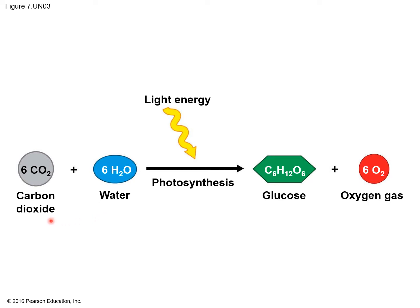For photosynthesis to take place, a plant would need the following: carbon dioxide from the air, water from the ground through the soil, and energy from light. The main product is glucose — that's the food the plant is making. A byproduct is oxygen, which is released into the air. So the reactants are carbon dioxide, water, and light energy, and the products are glucose and oxygen.